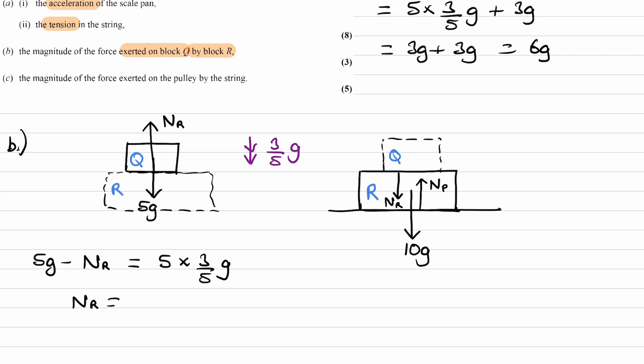So, rearranging this. So, switch these two things around. We end up with NR is equal to 5G minus what we have over here. The 5s cancel. This would become 3G. So, minus 3G. So, that normal reaction force is then 2G, which is our answer for part B.